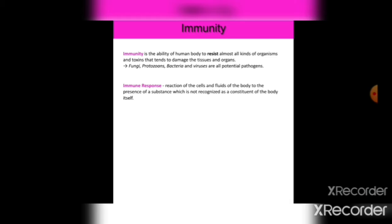Immunity is a defense mechanism of the body — it fights against foreign particles that enter our body, protects against pathogens, and shields us from diseases caused by fungi, protozoa, bacteria, and viruses. These are all potential pathogens. A pathogen is defined as any agent that causes disease. Immune response refers to the reactions of the cells and fluids of the body to the presence of a substance not recognized as a constituent of the body itself.